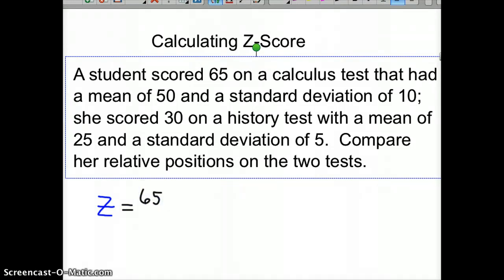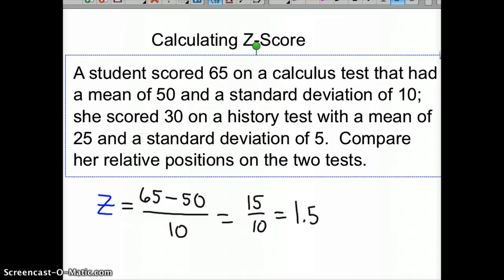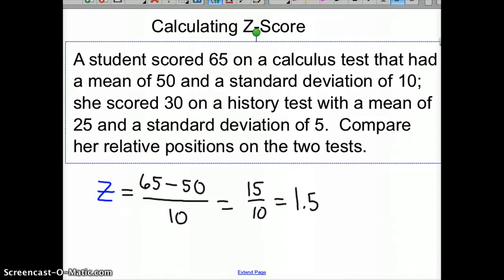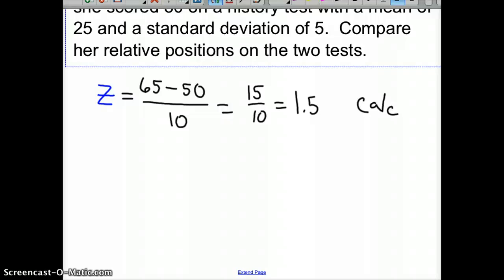Her z-score for the calculus test was 15 over 10, which is 1.5. That's her standard score for that test. I'll put calc beside it. Now for the history test, you figure it the same way.